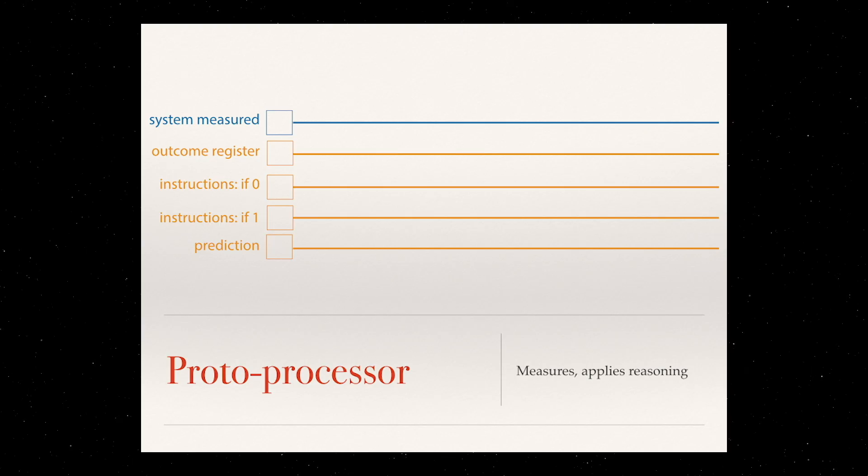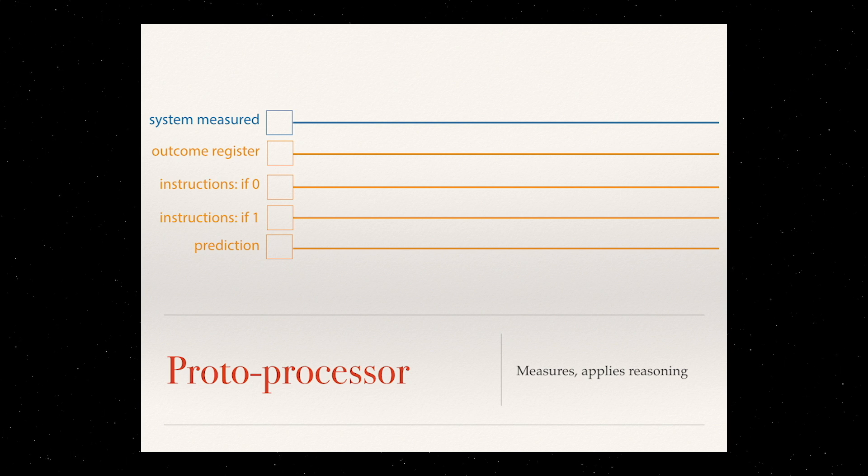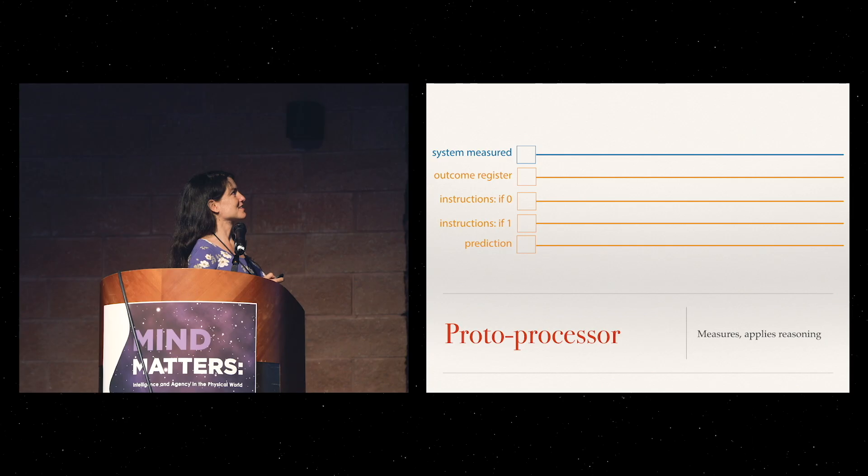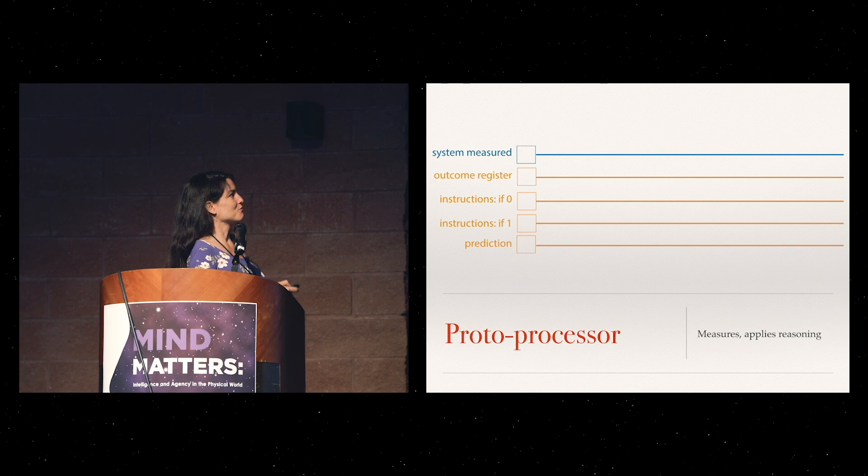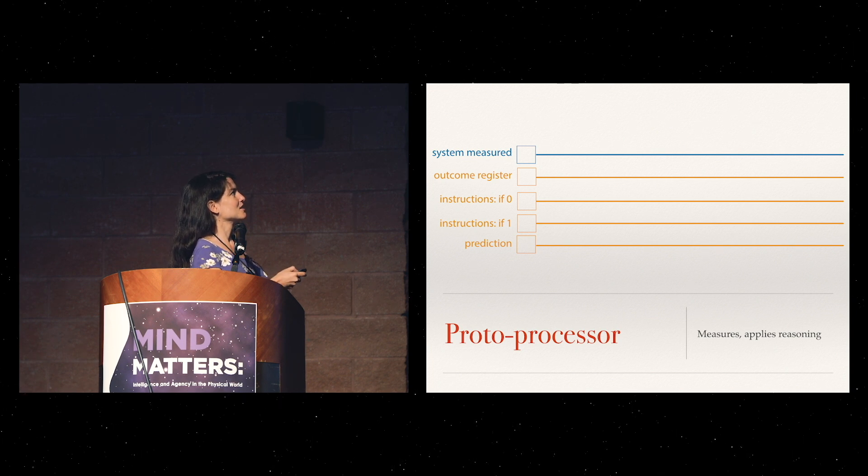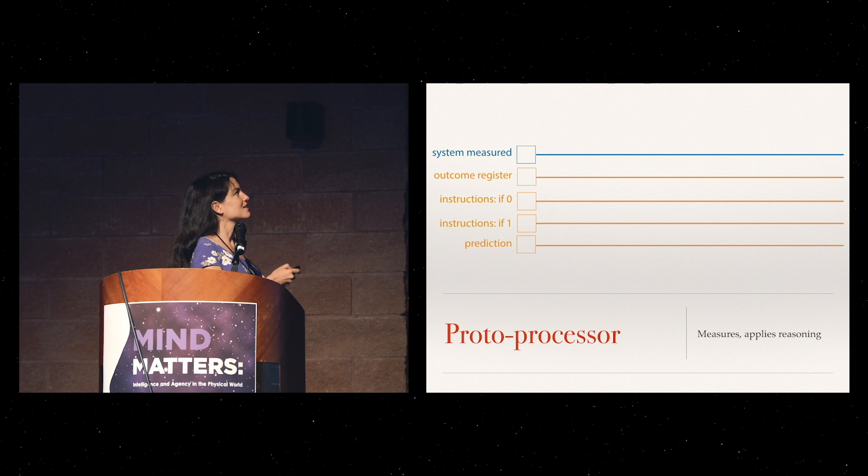But now let's just think about how we're going to model this idea of an agent. We do this, so now it's classical again, there's no dragon, via a very simple proto-processor. What we wanted to do is to measure some system and apply some reasoning and make some prediction. The ingredients are: here's the system measured in blue, and all the four lines that are in orange represent the agent.